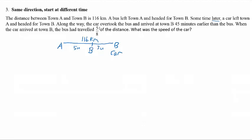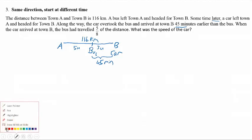We also know that the car arrived at town B 45 minutes earlier than the bus, which means the bus needs another 45 minutes to cover the rest of the distance. The bus requires another 45 minutes to cover the remaining 3 units. So we need to find what is the length of these 3 units, because once we have that length, we can take the distance divided by the bus time to get the speed of the bus.